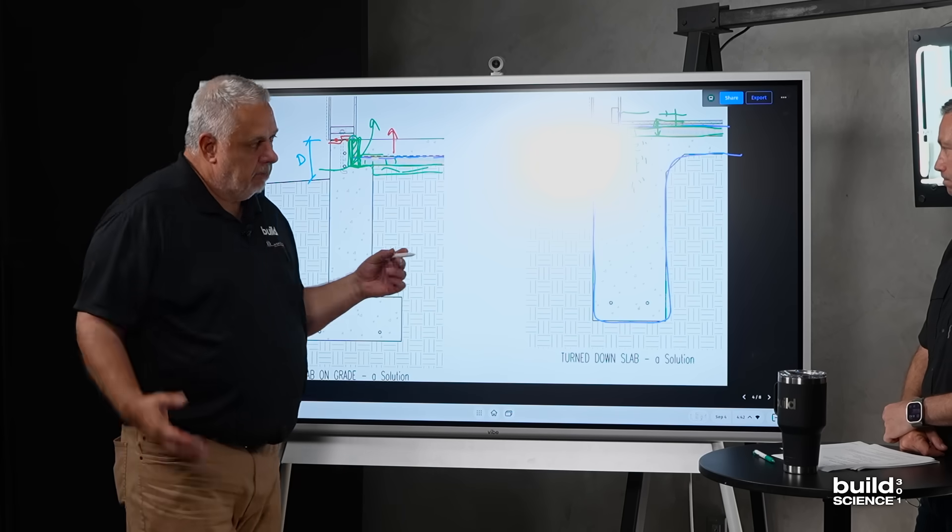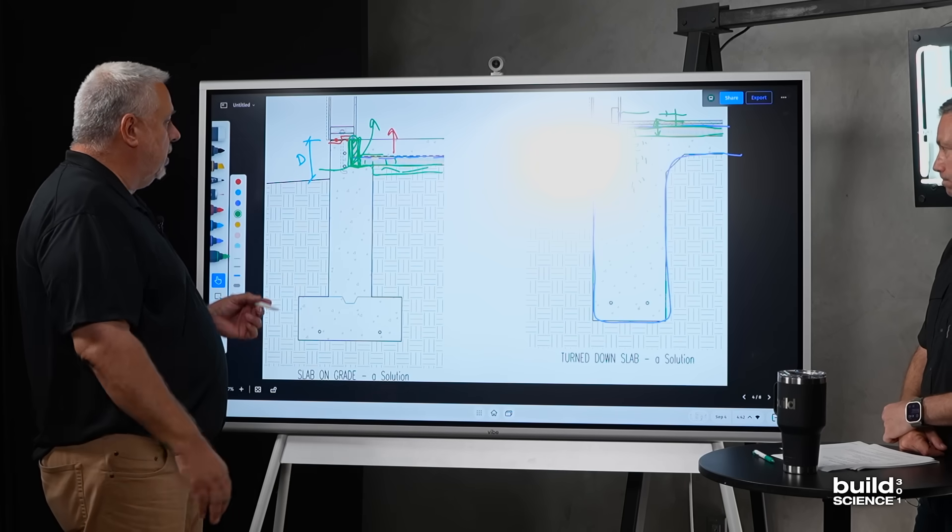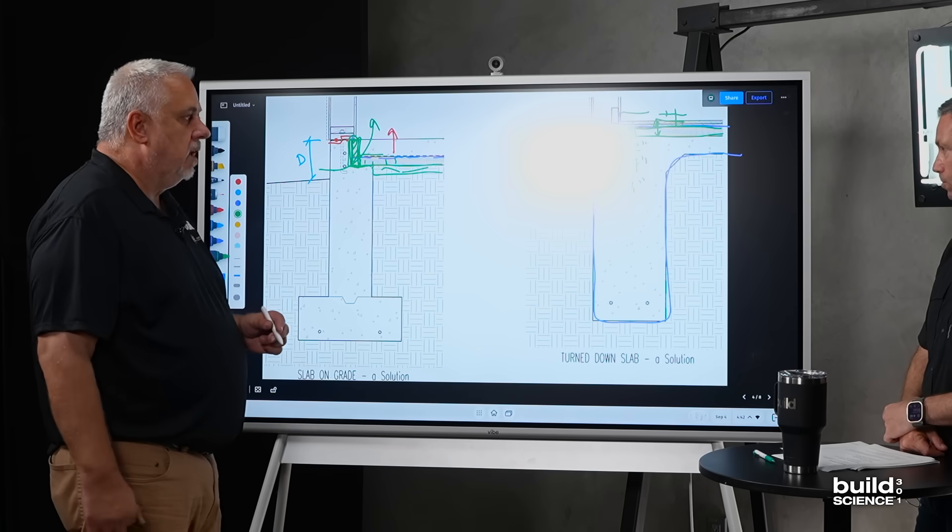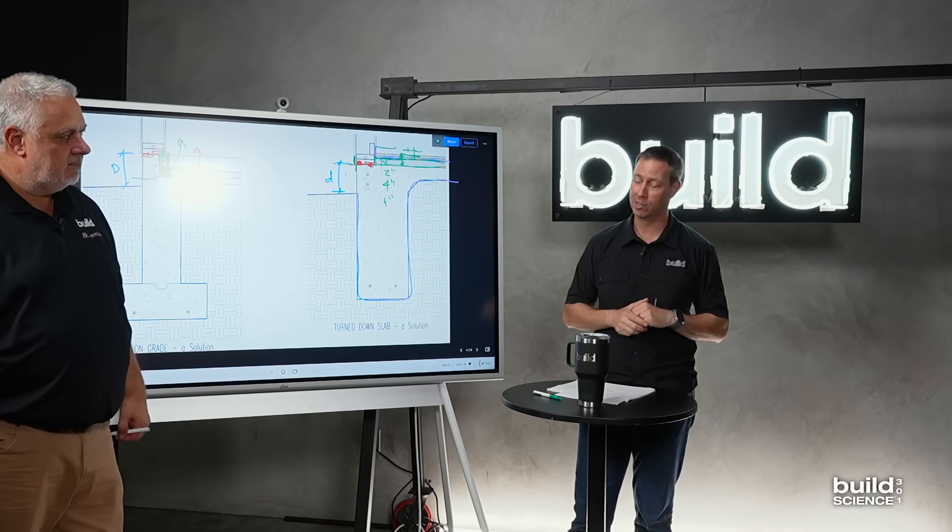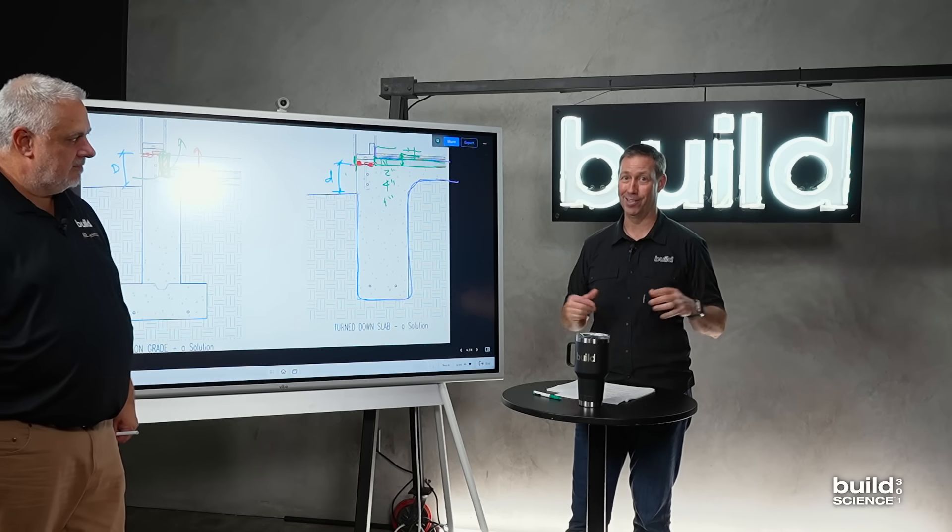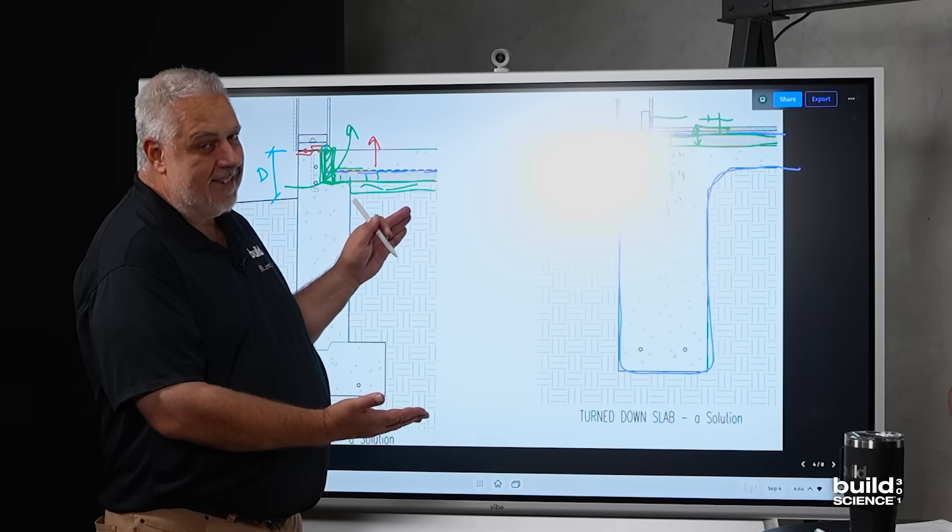Well, there you have it. That's the first building assembly, the three-piece and the turndown slab. I love it. All right, my friends. Stay tuned for episode two where we're going to get into basement foundations and crawl spaces. Like our friend Joe Lstiburek would say, it's not rocket science. It's build science.